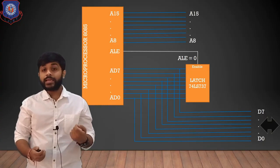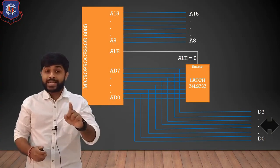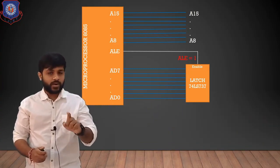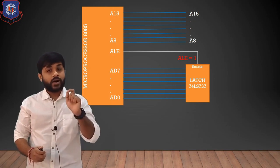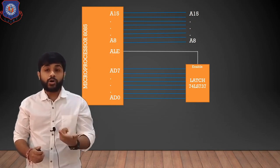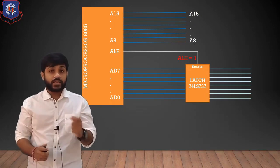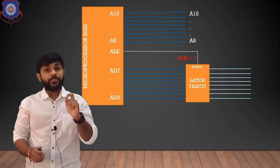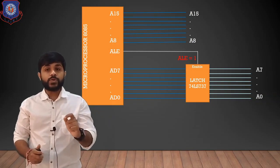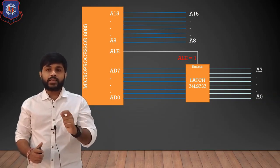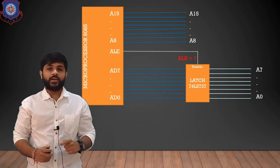So what happens when ALE is 1? When ALE is 1, the latch will provide some output. When ALE is 1, the output of the latch will be considered as A0 to A7. Together, it will become a 16-bit address bus.